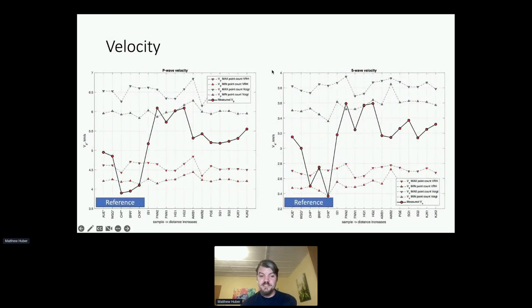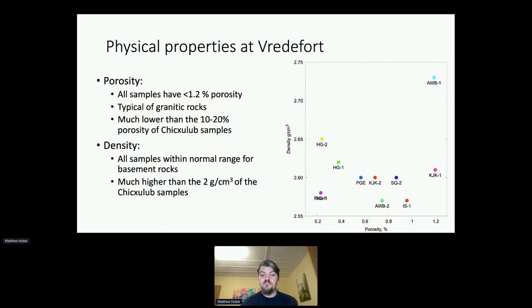We can also look at the velocities. Again, these are reference materials on the far left, and then the other points are the Vredefort materials. We see they're falling very nicely between the ranges of expected values, meaning that they were not severely affected by the shock process, or at least that it's not been preserved.